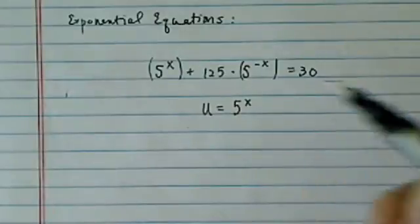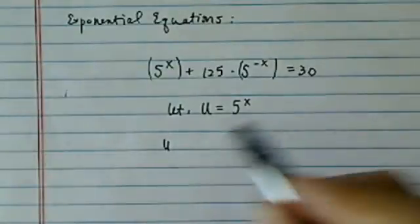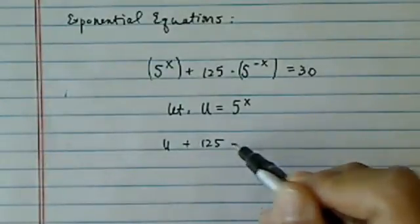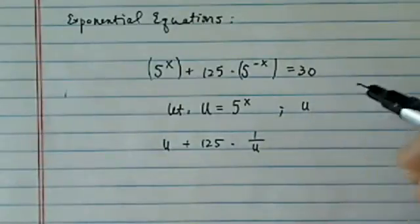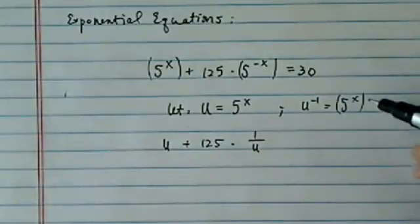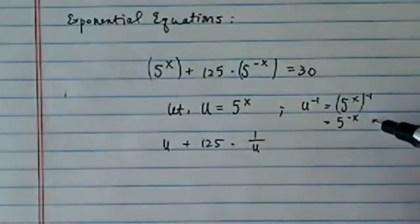We're going to do a substitution for variable. Let u equal 5^x. Then you have variable u plus 125 times 1 over u, because u to the minus 1 would be equal to 5^x to the minus 1, which is equal to 5 to the minus x.